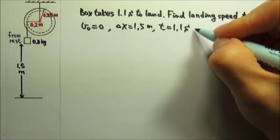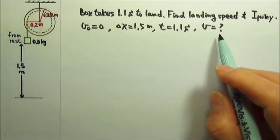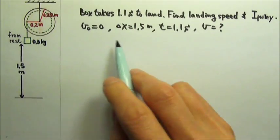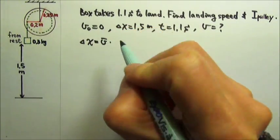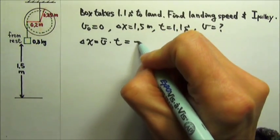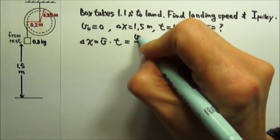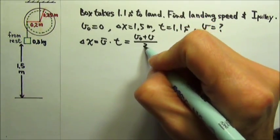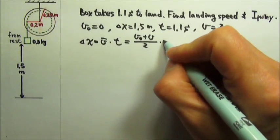So if we want the landing speed, that is the speed at the end, we want the final velocity. Which equation conveniently relates all of these? It's the Δx equals the average velocity times time. And for constant acceleration motion, the average velocity is the average of the initial and the final velocities.